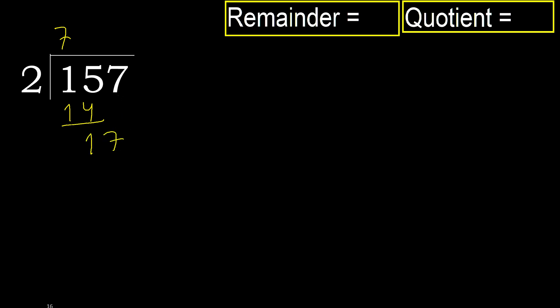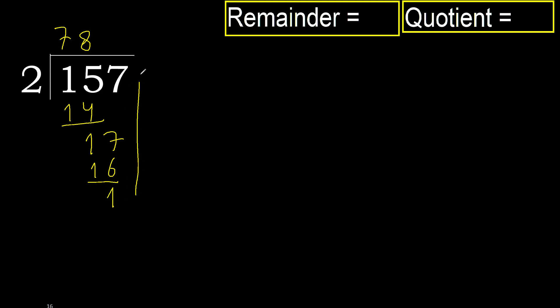17. 2 multiplied by 9 is greater. Multiplied by 8, 16 is not greater. 17 minus 16 is 1. Next. There is no number, therefore finish it.